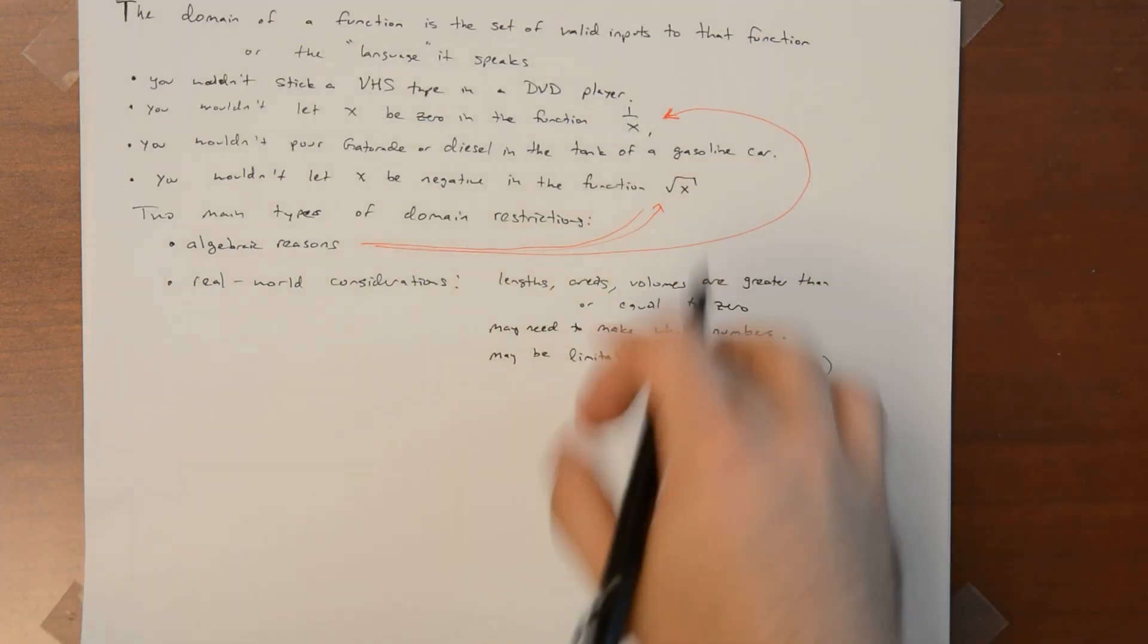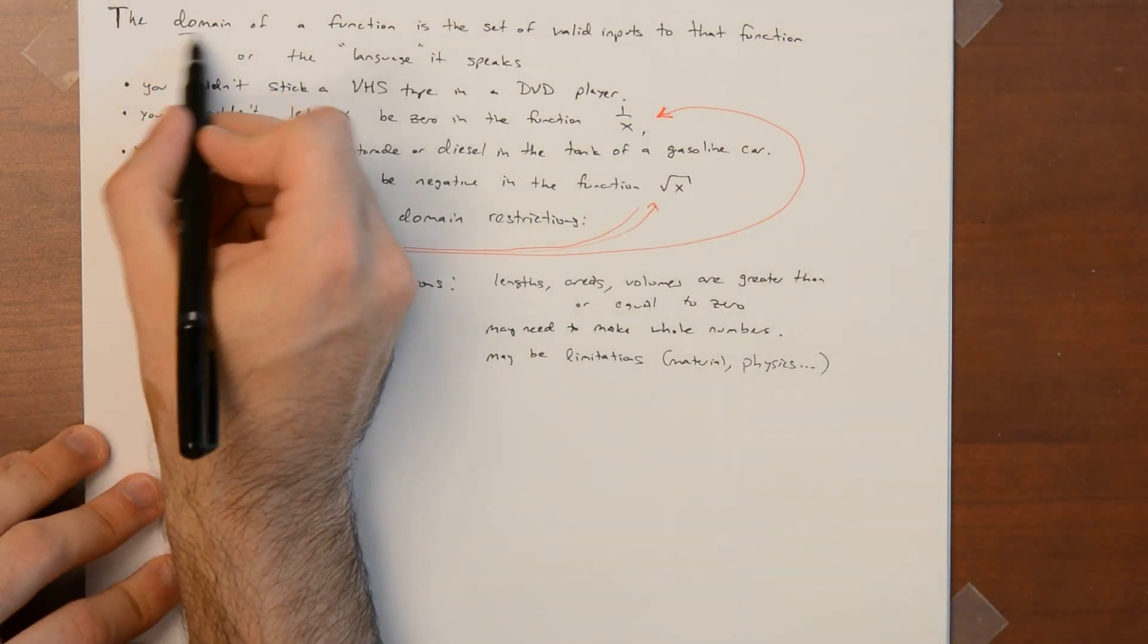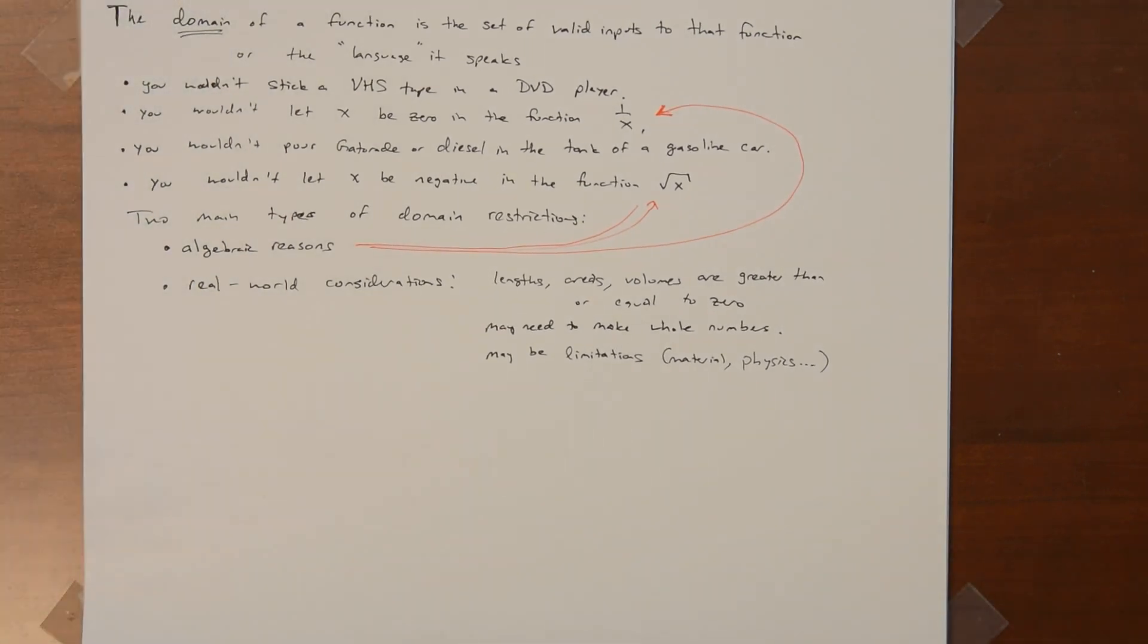So there's these sort of two types of reasons why your domain may be smaller than you might expect. There may be limitations on what numbers it makes sense to plug into your function. So this is what the domain is for. It allows you to know if you're asking a question in the right language.